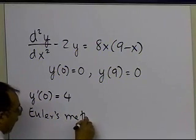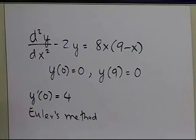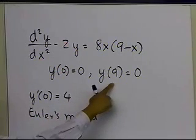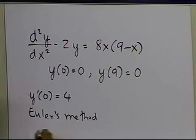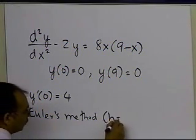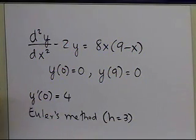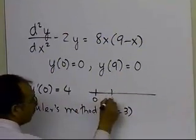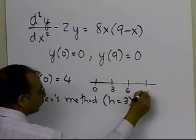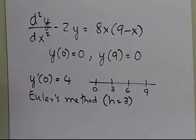I'm just recapping what we've done so far. We said, let's go ahead and use y'(0) equal to 4, and figure out how close it comes to y(9) equal to 0. We used Euler's method with h equal to 3, which implies that you are taking three steps to go to 9, from 0 to 3. You're basically starting at 0, going to 3, going to 6, and going to 9 by using Euler's method.